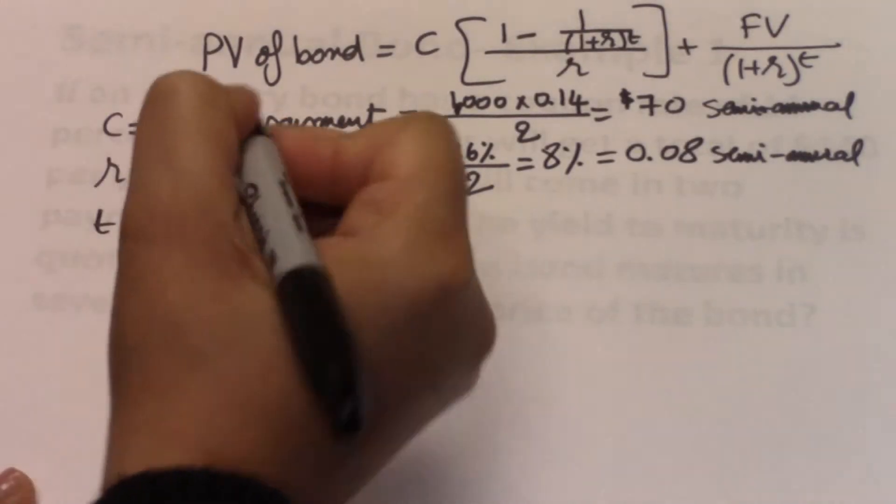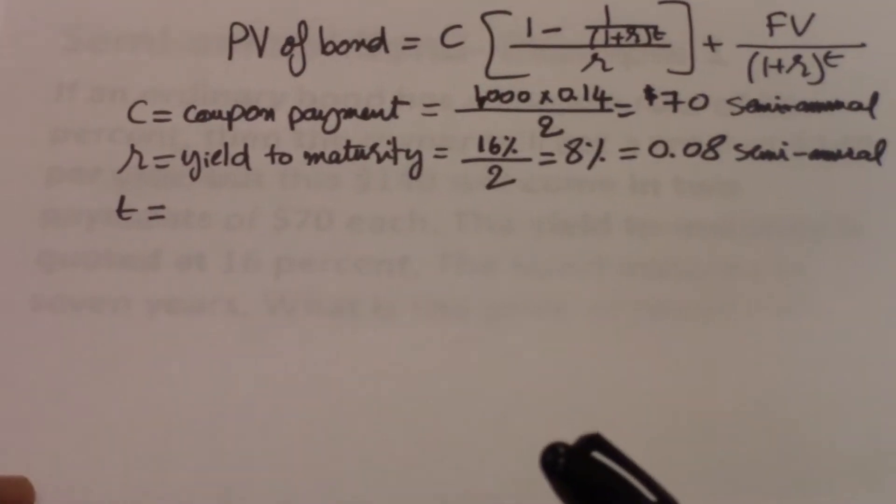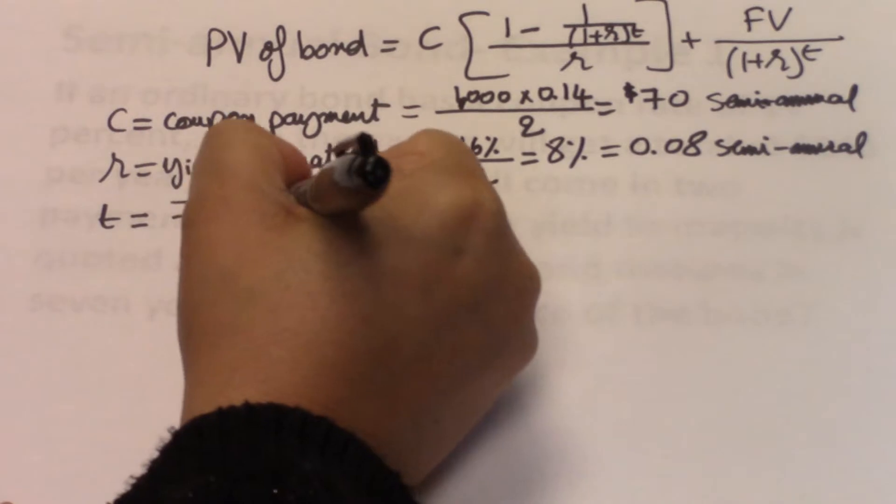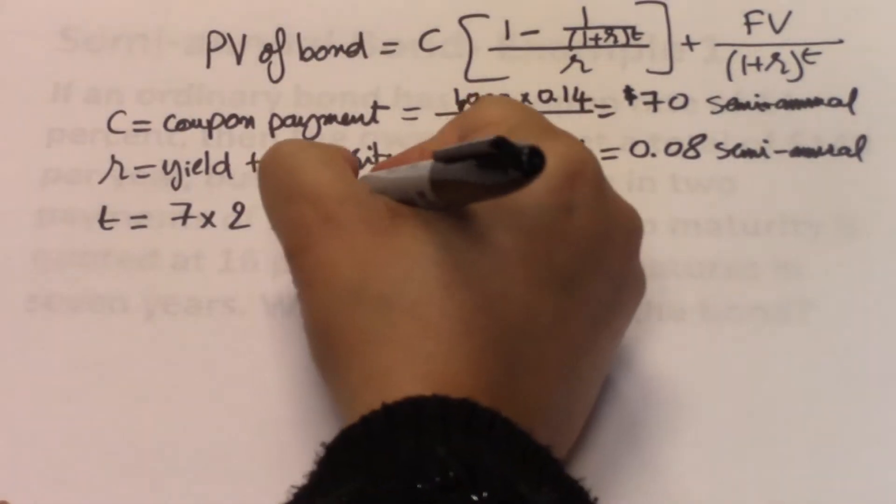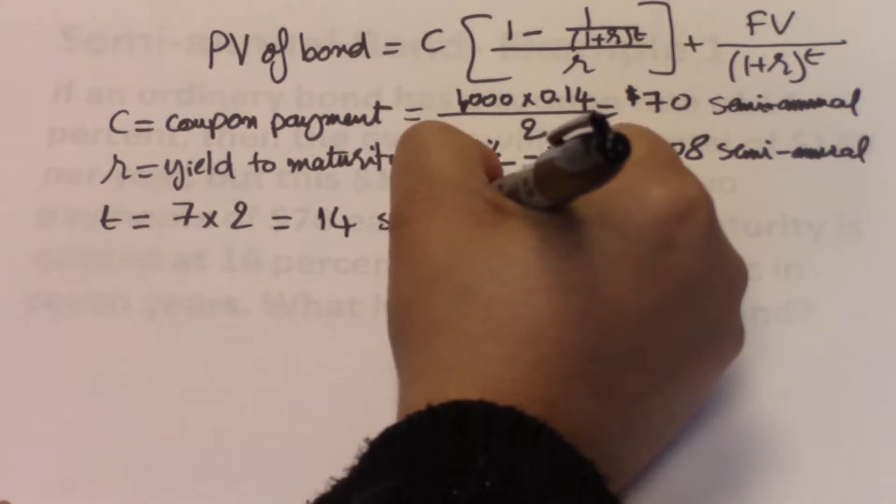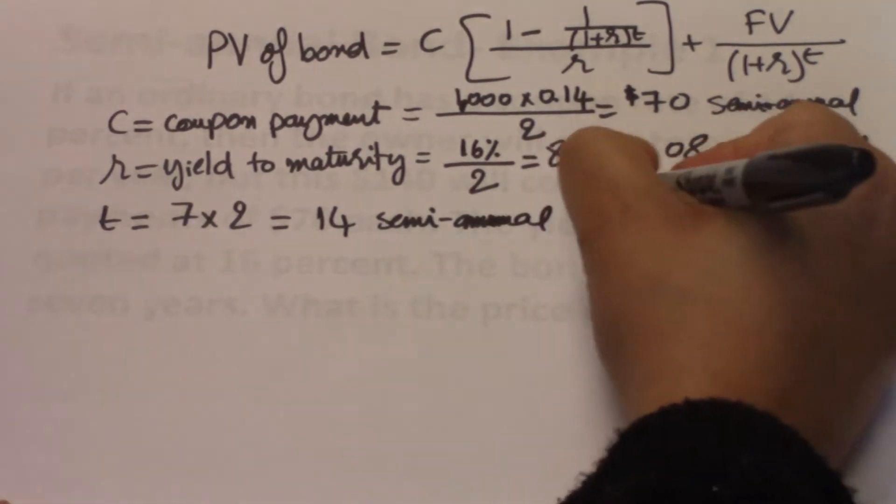And then we have t. t is the time to maturity. So here, the bond matures in 7 years. And so you take the 7 years and you multiply by 2. So t is 7 times 2 because you're getting paid each year twice. So you take the number of years that you have to maturity and you multiply them by 2 to be able to get the semi-annual t. So in this case, it would be 14. And again, this also has a semi-annual frequency. Future value is 1,000. This is what you get at the end of this bond.